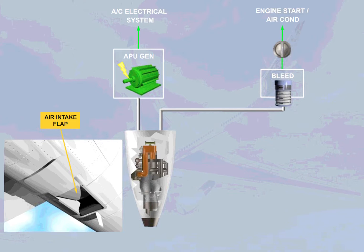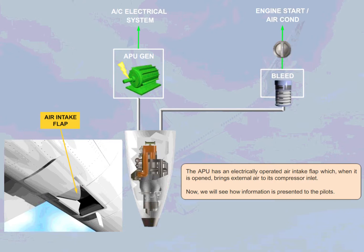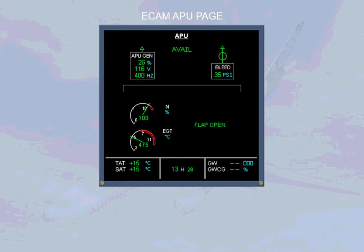We will now see how information is presented to the pilots. In the cockpit, you can check the following APU parameters on the ECAM APU page: EGT and compressor speed, APU generator, APU bleed, and air intake flap position.